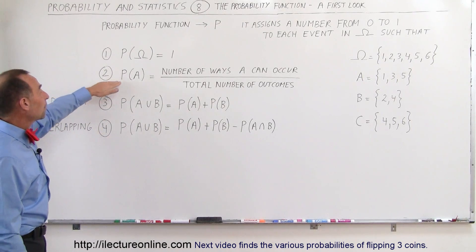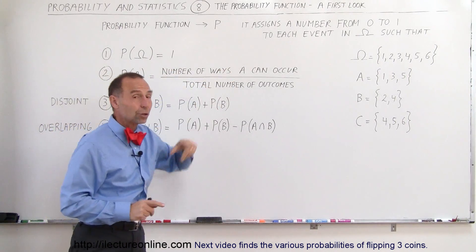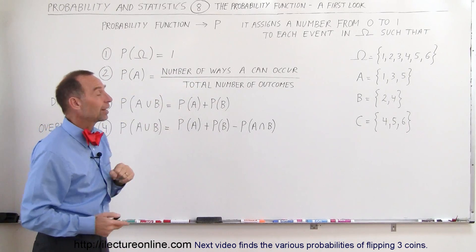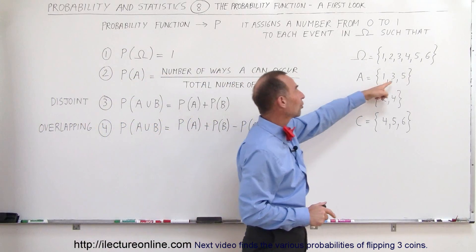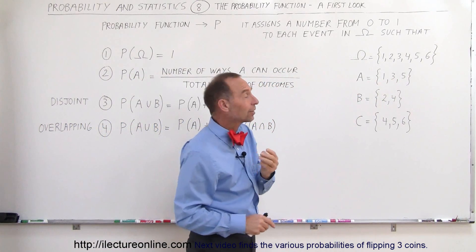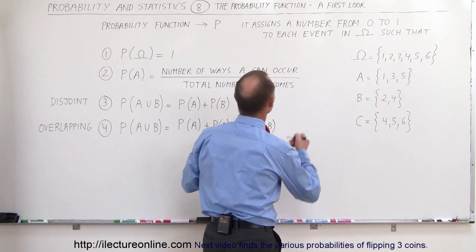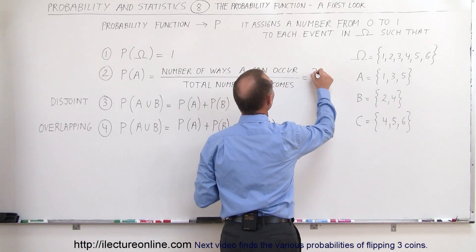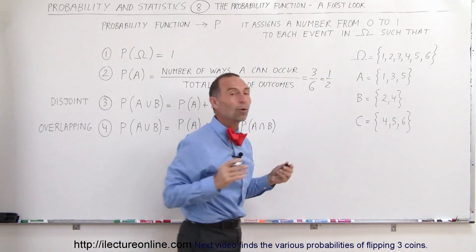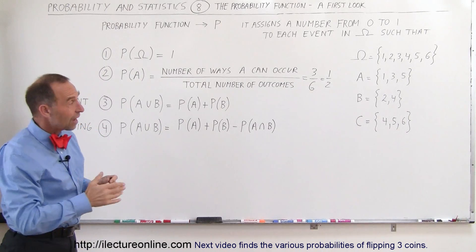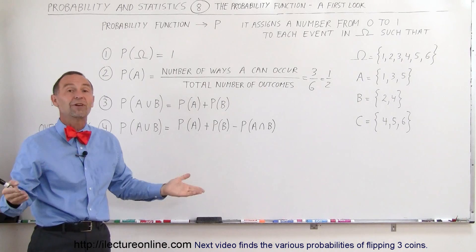The second rule is that the probability of some event A is equal to the number of ways A can occur divided by the total number of outcomes. In our example, the possible outcomes for A are 1, 3, and 5 — that's 3 possible outcomes out of a total of 6. So the probability of A equals 3 out of 6, which is 1/2, or 50%, or 0.5. If you toss the die, there's a 50% probability you'll get either 1, 3, or 5.